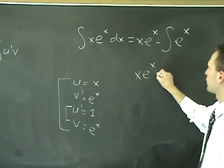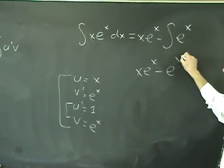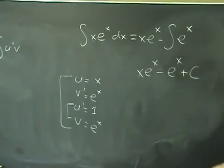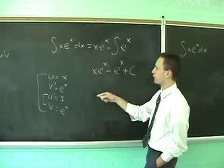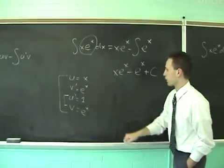You just get x e to the x minus e to the x plus c. And you can check this with differentiation. You do the product rule, and that's what's going to pop out.